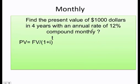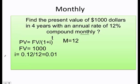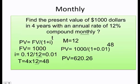Now let's do it monthly. The same problem, but now my M is going to be equal to 12. Remember, I need to divide my rate by 12, my time, I need to multiply it by 12, and finally I get my answer.